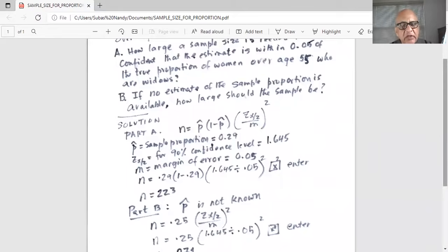We take our calculator. We will do the calculation just right like it is written on the screen. So we will do 0.29 then left parenthesis 1 minus 0.29 right parenthesis then another left parenthesis and inside that parenthesis is 1.645 which is the z alpha by 2 divided by 0.05 is the margin of error.